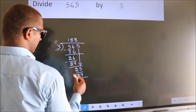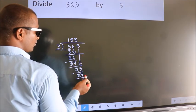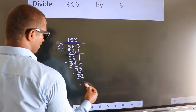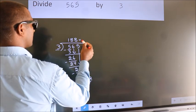Now we subtract, we get 1. No more numbers to bring down, so we stop here. This is our remainder. This is our quotient.